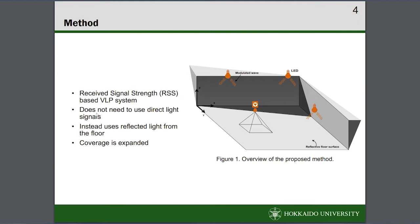Our method is based on received signal strength and its distribution across the floor. It does not require direct light but instead captures the reflected light from the floor surface. Since there is no need to capture the light directly, the burden on the user is reduced and the system coverage is expanded. It also eliminates the need for high-resolution cameras to analyze LEDs through image processing.